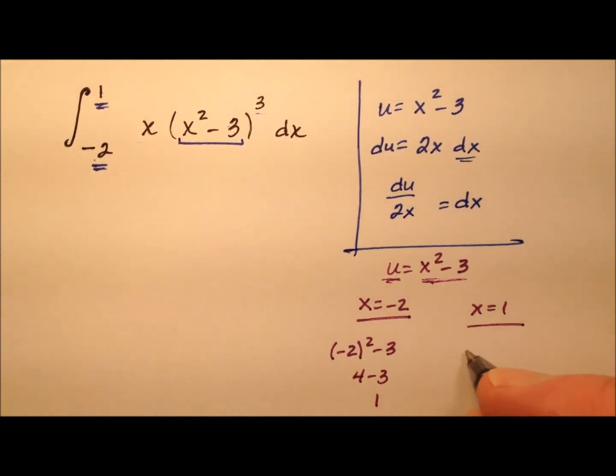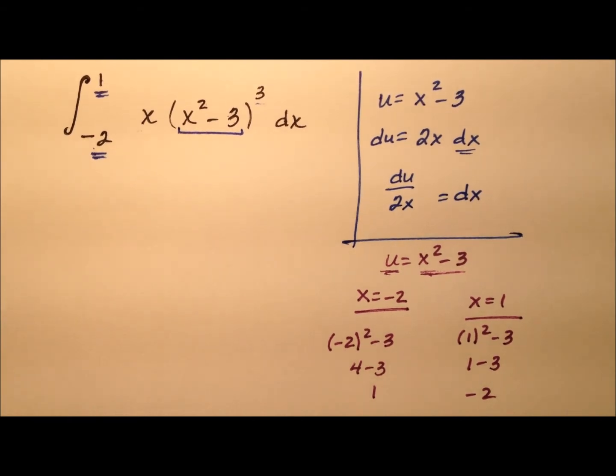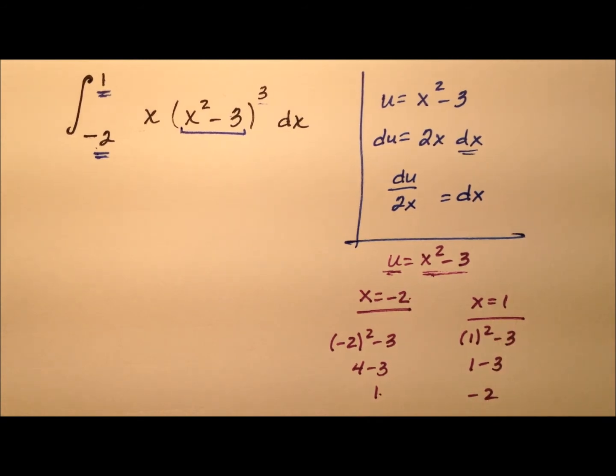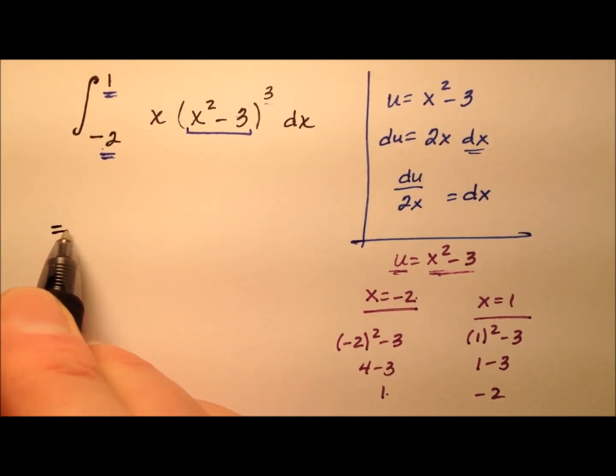And the other one, x equals 1, so we have 1 squared minus 3. So 1 minus 3 is negative 2. Interestingly enough, it looks like they just swap. The negative 2 becomes a 1, and the 1 becomes a negative 2. So let's go ahead and rewrite this integral now with all of this information we have.